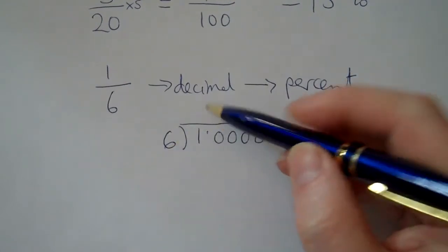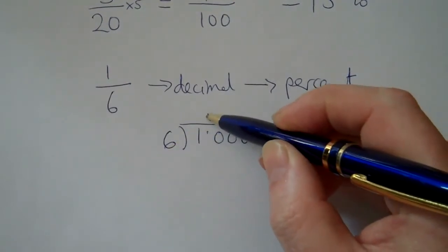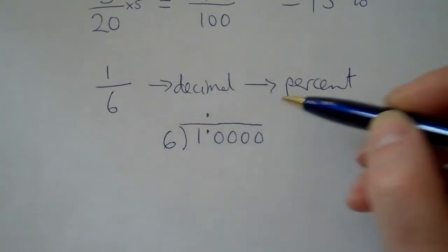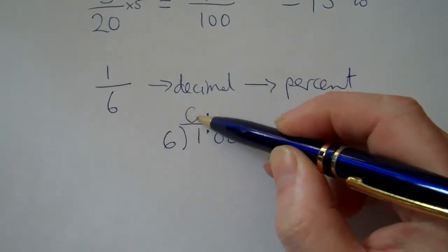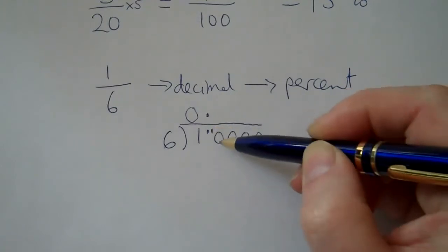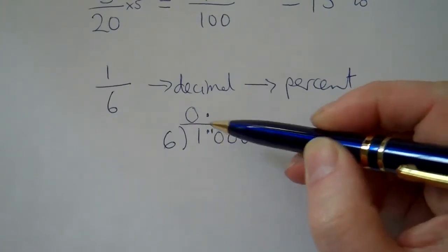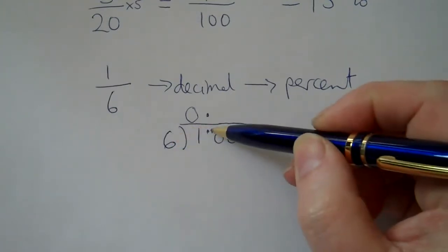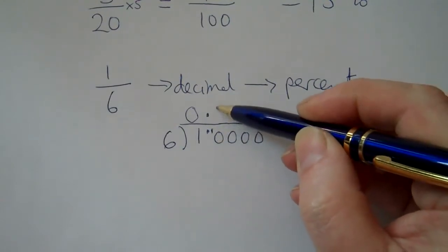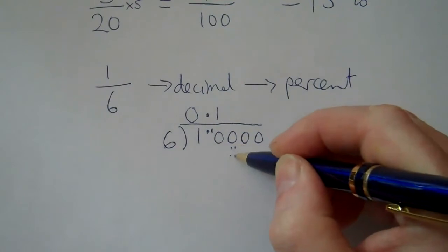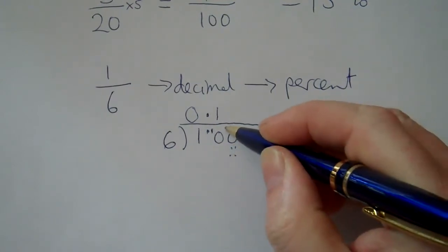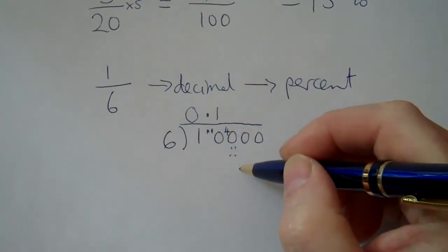How many sixes? Oh, I almost forgot to put the decimal point directly above, start again. How many sixes in one? None. So that one gets carried over here to ten. How many sixes in ten? One six is six, seven, eight, nine, ten, four left over. So let's put four there for forty.